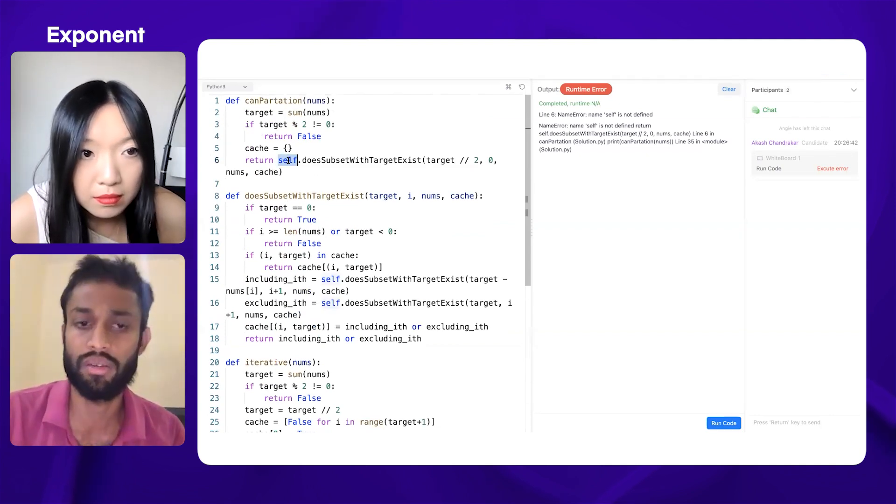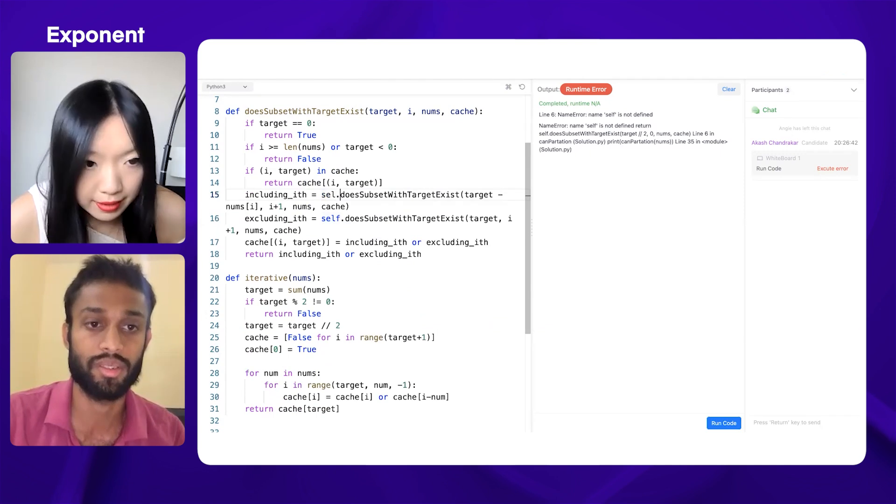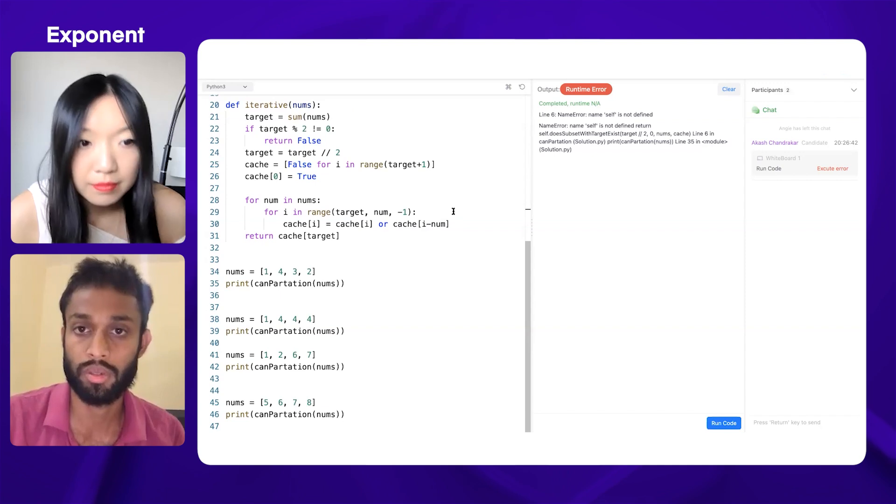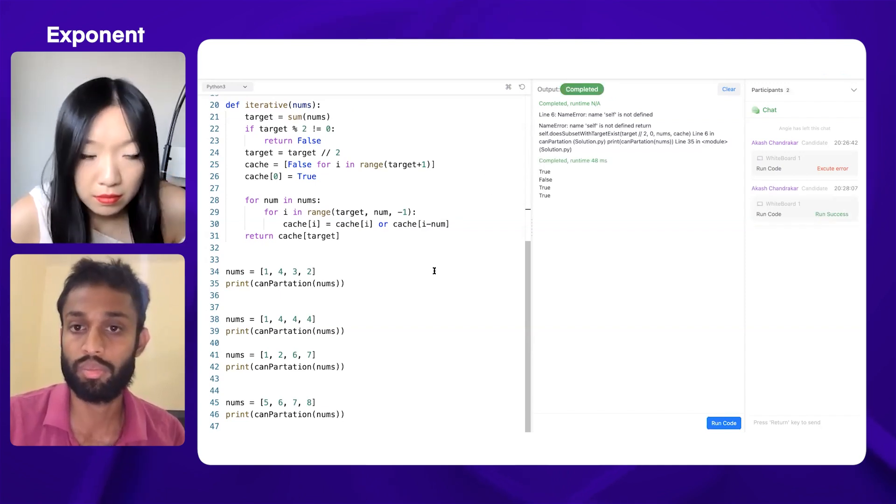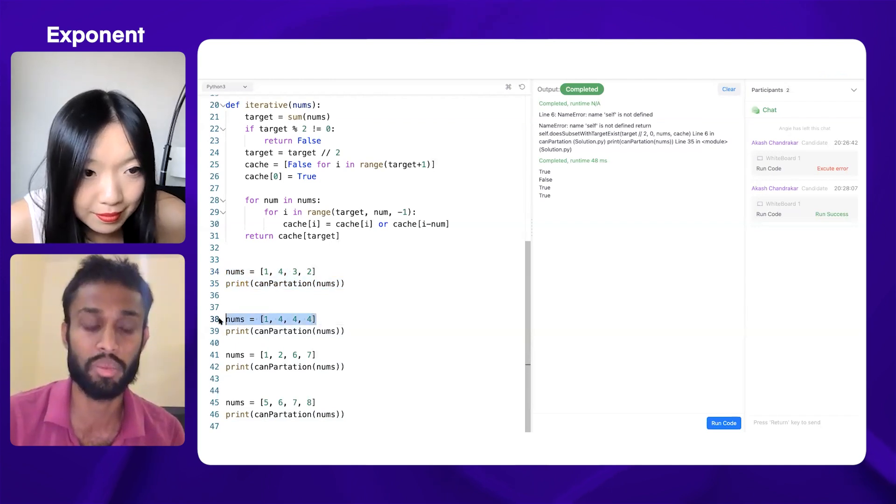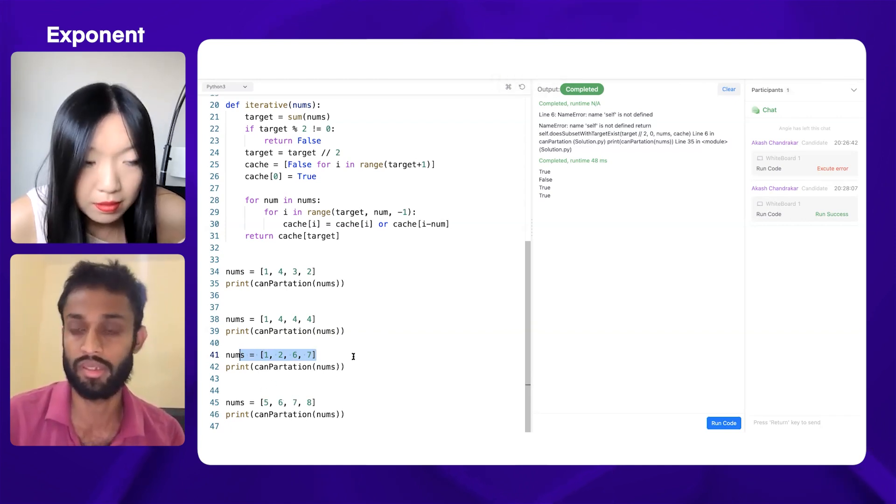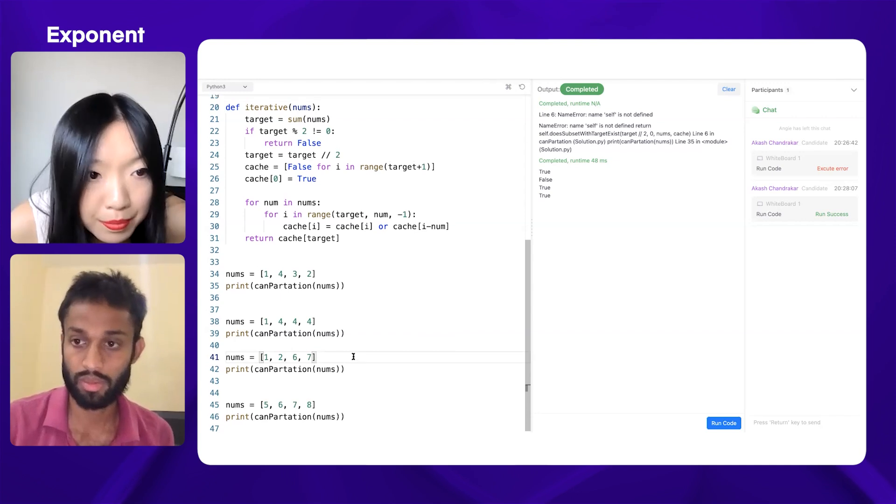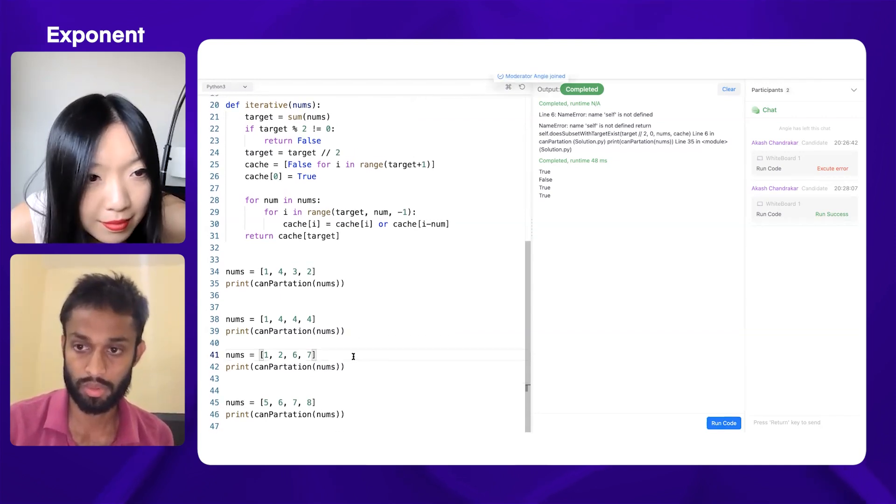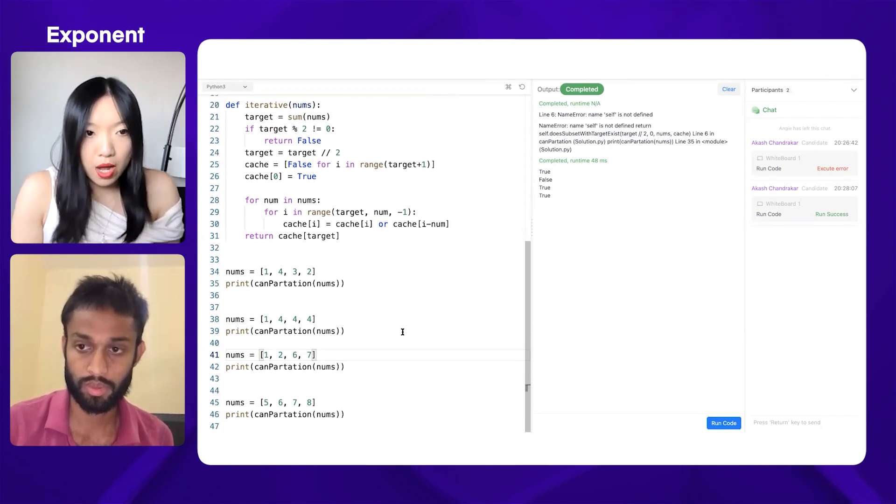Yeah, yeah, I think, yeah, I think this self is not needed because we don't have any class assets. So exactly. Yeah. Yep. So I think the first one is true. And this is the odd one. And these two have one and seven and similarly, five and seven and six and eight. So, okay, so I think, are there any other test cases that you can think of?